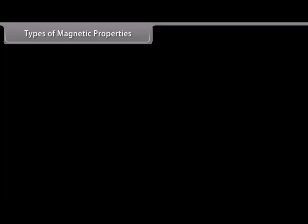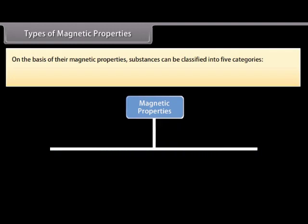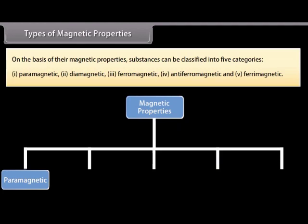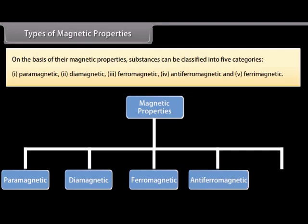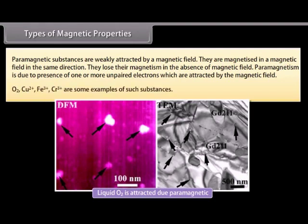Types of magnetic properties: Substances can be classified into five categories. (1) Paramagnetic substances are weakly attracted by a magnetic field. They are magnetized in a magnetic field in the same direction and lose their magnetism in the absence of a magnetic field. Paramagnetism is due to the presence of one or more unpaired electrons. O₂, Cu²⁺, Fe³⁺, and Cr³⁺ are examples. (2) Diamagnetic substances are weakly repelled by a magnetic field. Diamagnetism is shown by substances in which all electrons are paired; pairing of electrons cancels their magnetic moments. H₂O, NaCl, and C₆H₆ are examples.